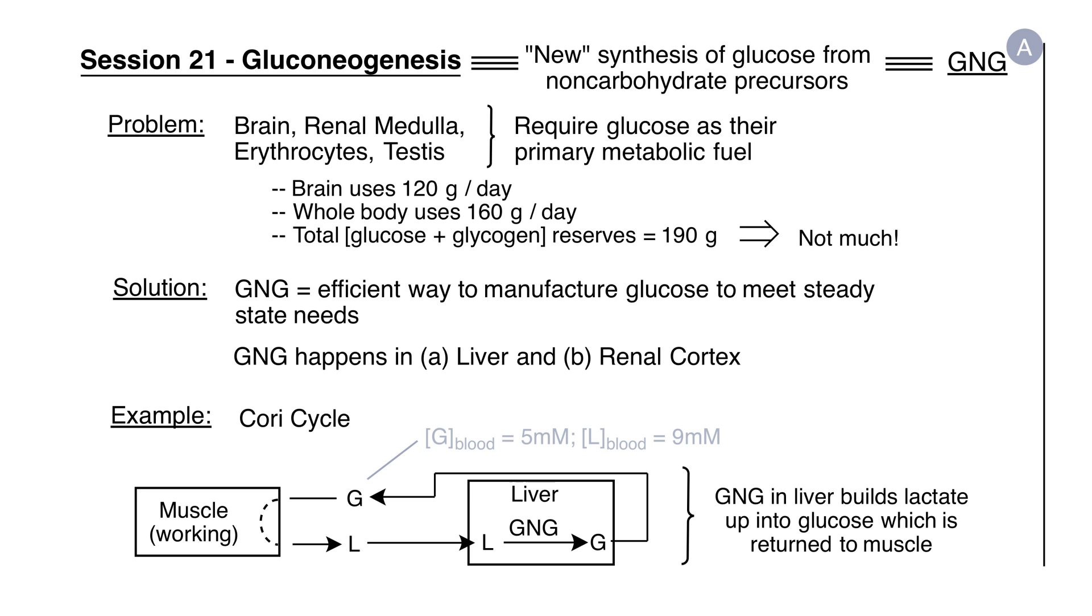Examples are the brain, renal medulla, red blood cells, and the testes. To give an idea of the scale of the problem the body faces, we only have about 200 grams of glucose or glycogen stored away in our body, and the brain alone uses more than half of that each day. So we don't have much in the way of a carbohydrate reserve.